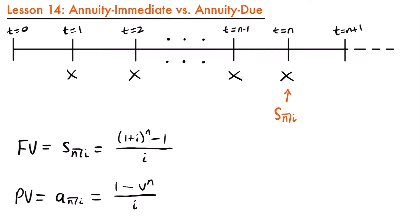For the present value of an annuity immediate, we would understand the present value to be found at the beginning of the first period, or t equals zero, because it is one period before the first payment is made. Looking at this timeline, our payments are being made starting at time equals one and going up to some time t equals n. The present value is calculated at t equals zero because it is one period before the first payment.